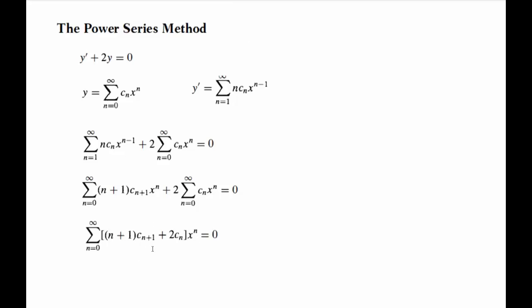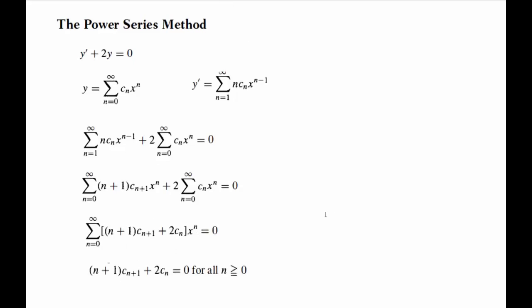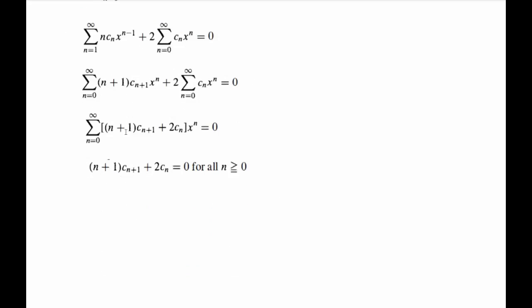Now, by the identity principle, this term—the only way we can solve this equation—the only solution is that if this coefficient of the power series for all n is going to be equal to zero. Now this gives us a very interesting recurrence relation, as you can see here.